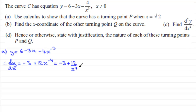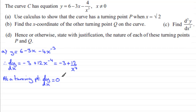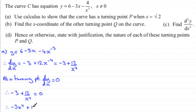At a turning point — same as a stationary point — the gradient is zero, and we get the gradient from dy/dx. So we set minus 3 plus 12 over x to the power 4 equal to zero. To solve this, multiply both sides by x to the power 4, giving minus 3x to the power 4 plus 12 equals 0.